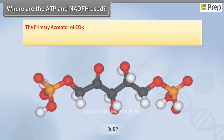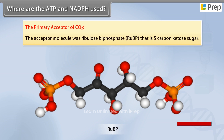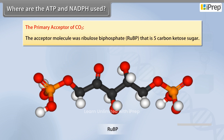The primary acceptor of CO₂ is the acceptor molecule ribulose biphosphate, or RuBP, which is a 5-carbon keto sugar.